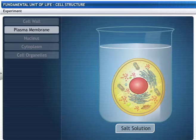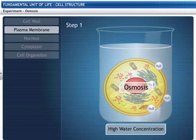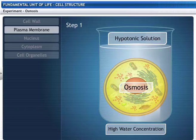Let's try this out. See what happens when the cell is placed in salt solution. One of three things could happen now. If the medium surrounding the cell has a higher water concentration than the cell, the cell gains water by osmosis and swells. Such a solution is known as hypotonic solution.